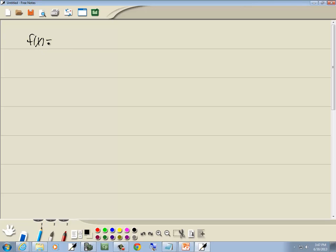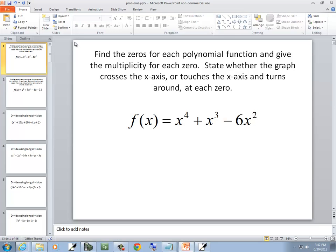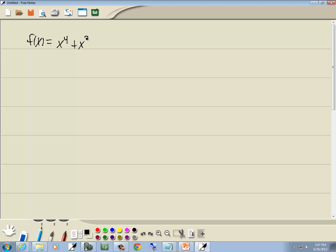We got f is equal to x to the fourth plus x to the third minus 6x squared. Now to find the zeros means you set it equal to zero and you solve it. So we got x to the fourth plus x to the third minus 6x squared equal to zero.